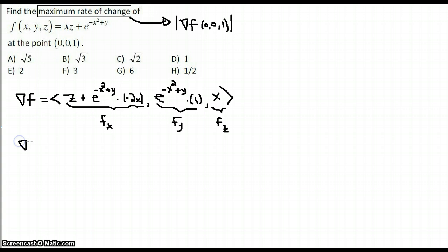Gradient of f at the point (0,0,1) is equal to, let's see. 1 plus 0 because it's multiplied by a negative 2x. So that's the i component. E to the 0, that's a 1, and the j component is 1. And then the k component is 0.